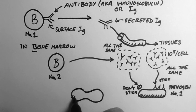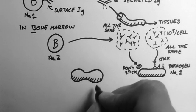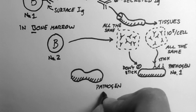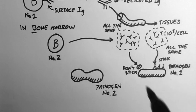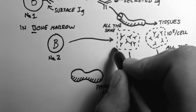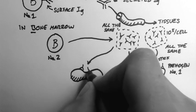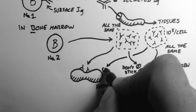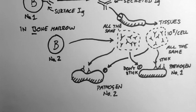Now if we take a second pathogen, the antibodies of B-cell number 2 might stick to this pathogen, while those of B-cell number 1 don't stick. So you need different B-cells for different pathogens.